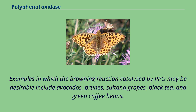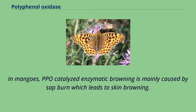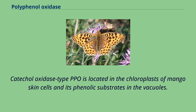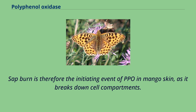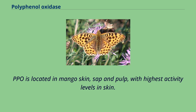Examples in which the browning reaction catalyzed by PPO may be desirable include avocados, prunes, sultana grapes, black tea, and green coffee beans. In mangoes, PPO-catalyzed enzymatic browning is mainly caused by sap burn which leads to skin browning. Catecholoxidase type PPO is located in the chloroplasts of mango skin cells and its phenolic substrates in the vacuoles. Sap burn is therefore the initiating event of PPO in mango skin as it breaks down cell compartments. PPO is located in mango skin, sap and pulp, with highest activity levels in skin.